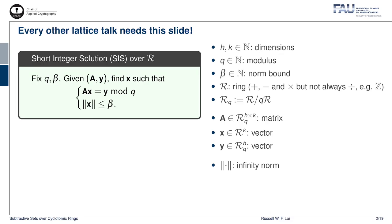But in this work, we are considering the SIS problem over the general ring R — that is, a mathematical object that allows you to perform addition, subtraction, and multiplication, but not always division.